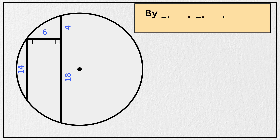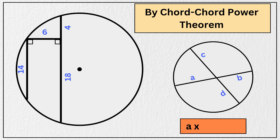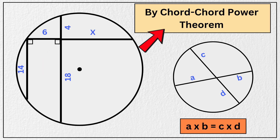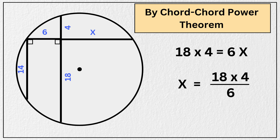Now using the Chord-Chord Power Theorem: if two chords intersect inside a circle, creating four small line segments, then a times b equals c times d. Let's extend this chord all the way to the circle and label this piece as x. Applying the theorem: 18 times 4 equals 6 times x, giving us x equals 12 units. So this full chord becomes 12 plus 6, which is 18 units.